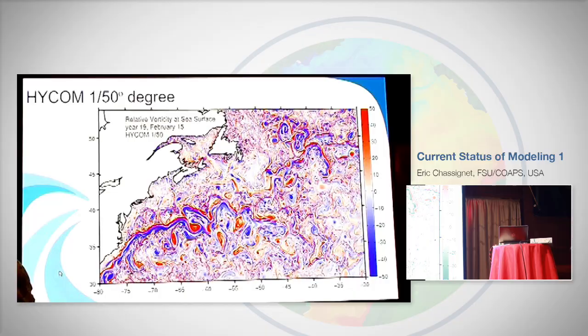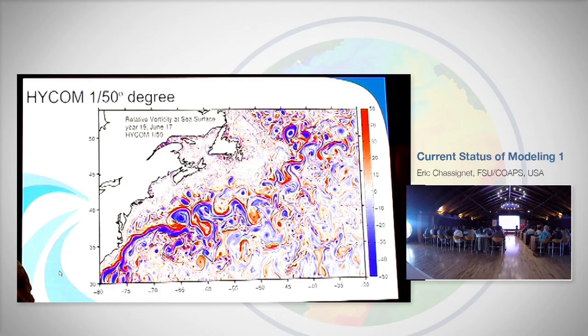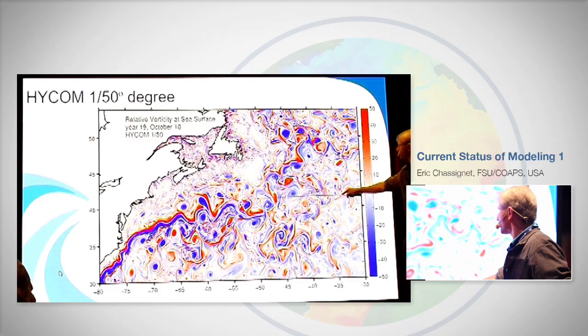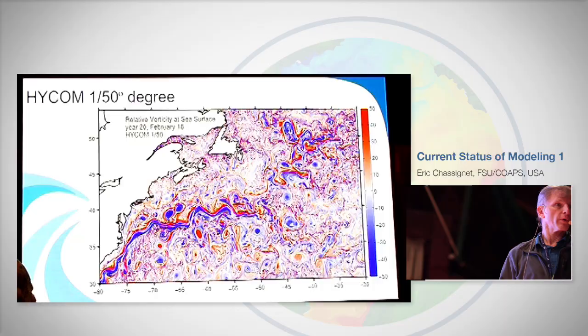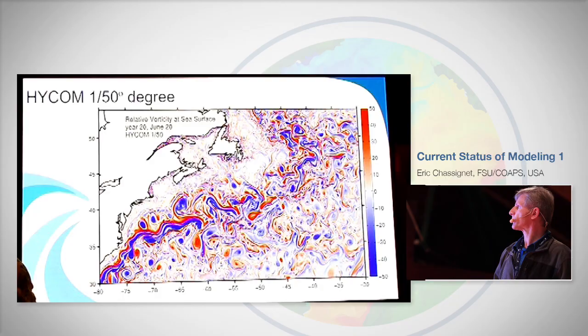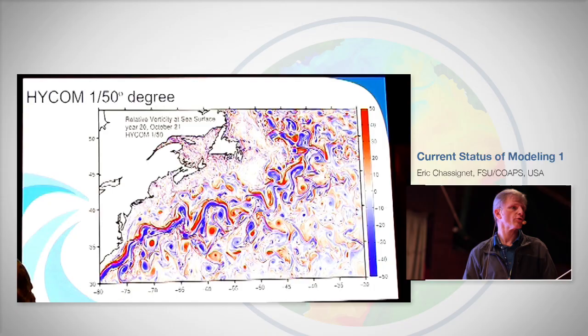What you see here is the relative vorticity relative to f, the rotation. This is a 20-year HYCOM run at 1/50th degree. In summer the mixed layer is relatively shallow and most features are on the mesoscale range. As Rosemary's slide showed, when the mixed layer depth increases — in March — you start to see all the sub-mesoscale and very fine features appearing. In summer, they disappear. You'll hear more about these simulations from Julian and me in the next couple of days.